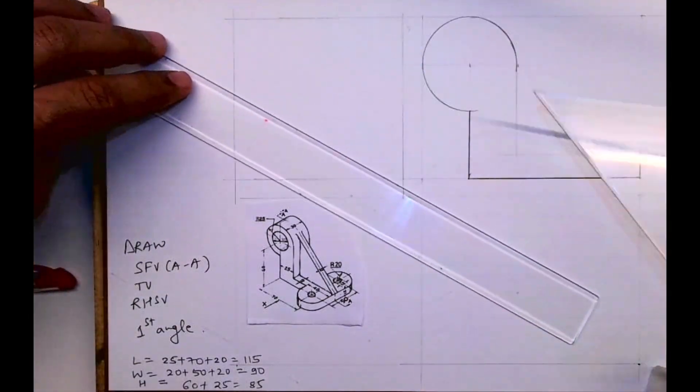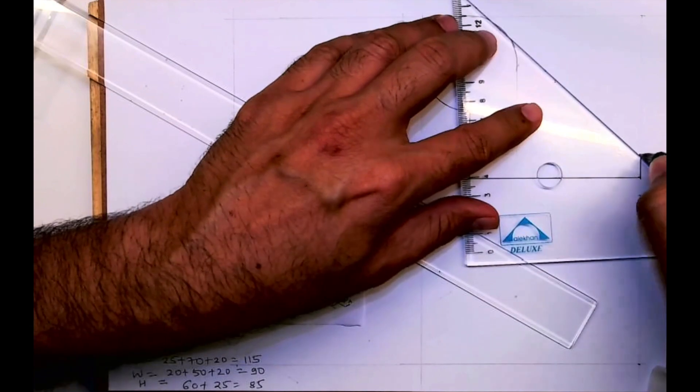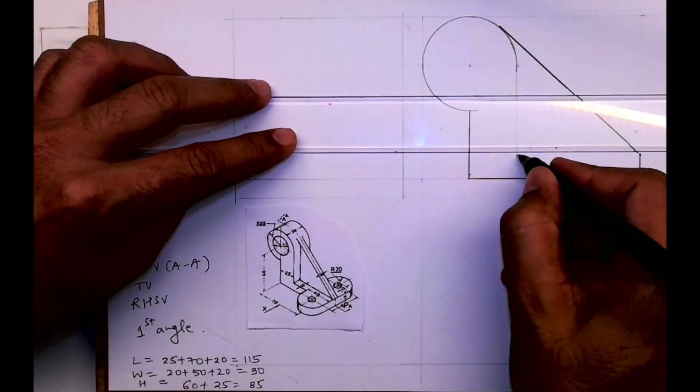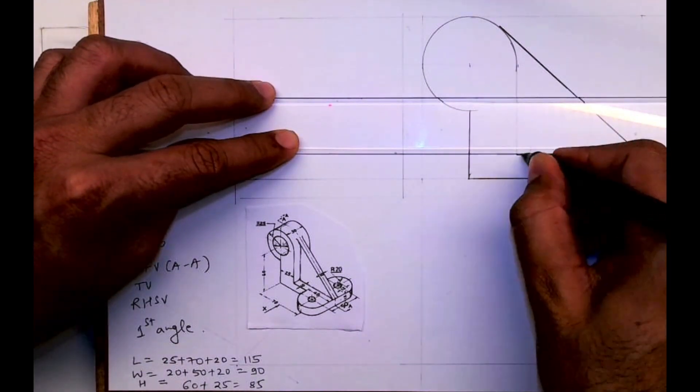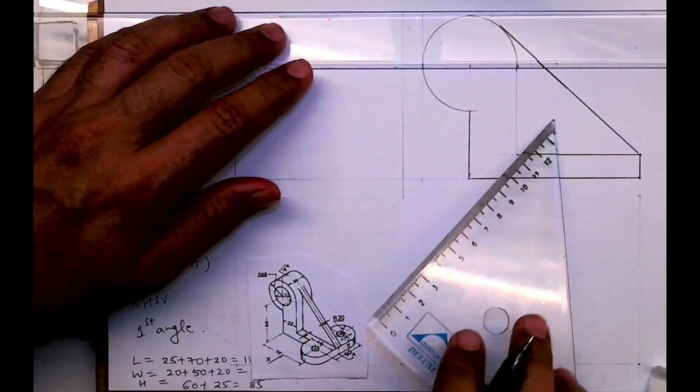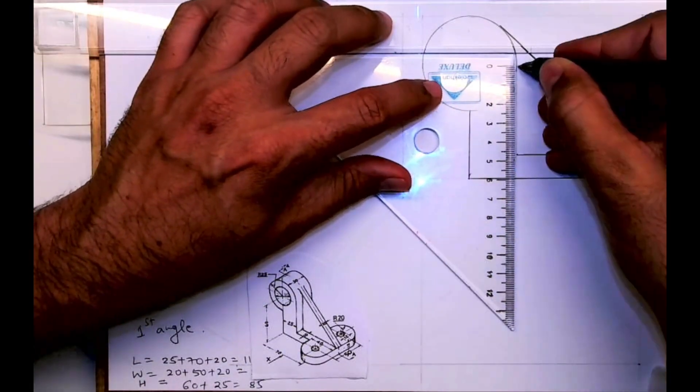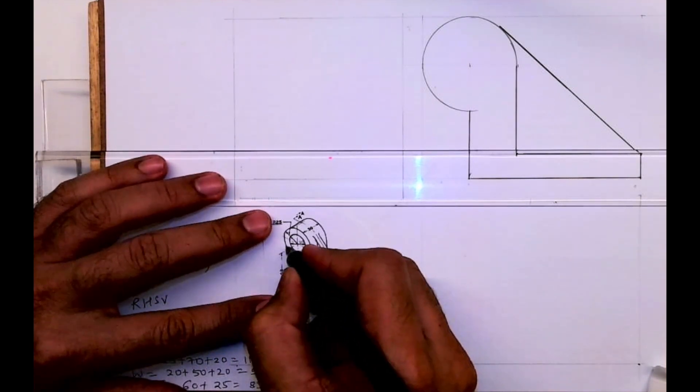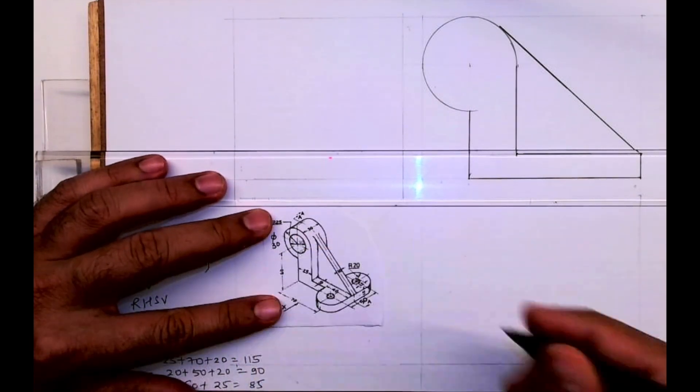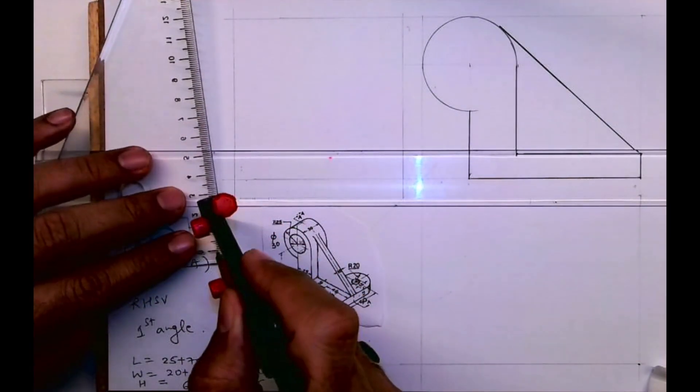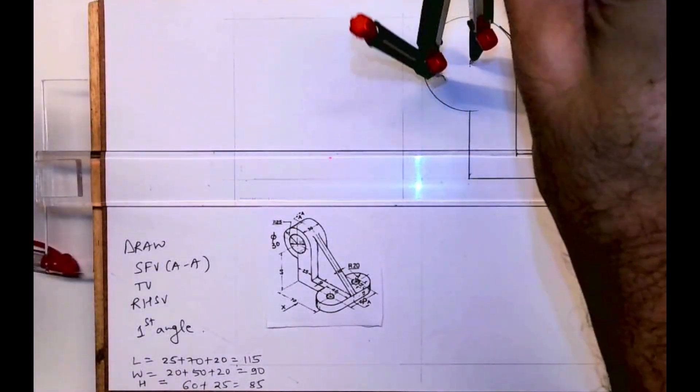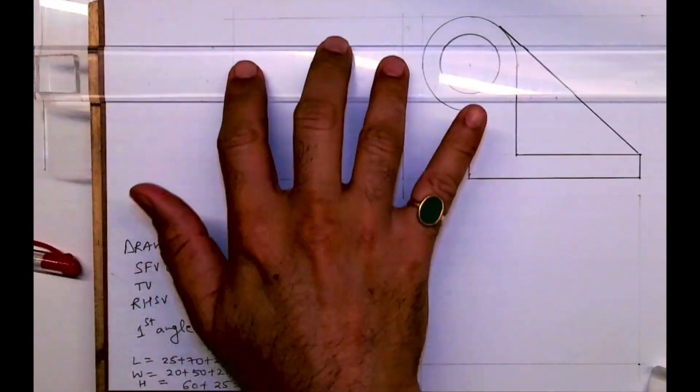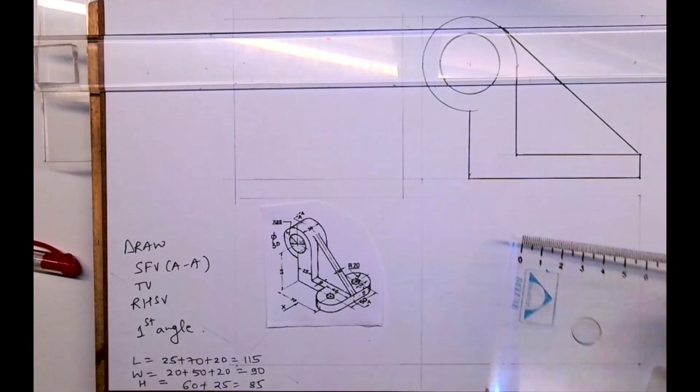After that you draw tangent. So tangent you can draw direct. So this is what you'll get. And the inside circle is diameter 30, so take radius 15 and you will draw circle.